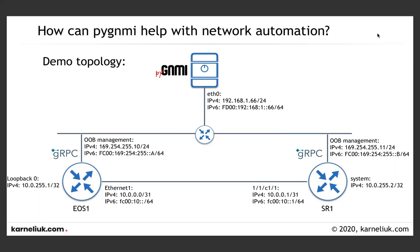Just to recap the topology we are using: we have our server running PYJNMI. It has both IPv4 and IPv6 addresses and we are connecting to two network functions — router Arista EOS and Nokia SRS. To one of the devices we are connecting using IPv6, to another using IPv4, so that you see both examples live.